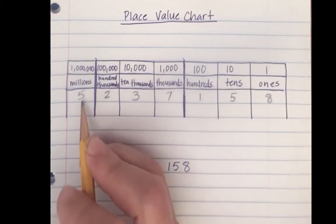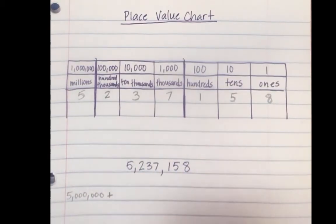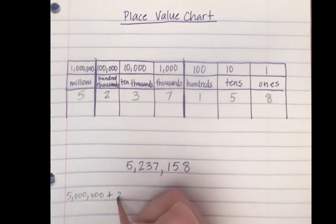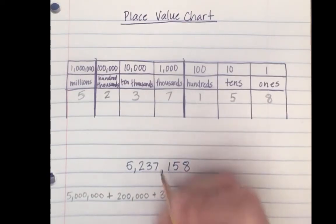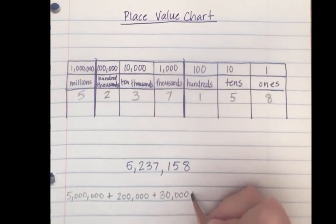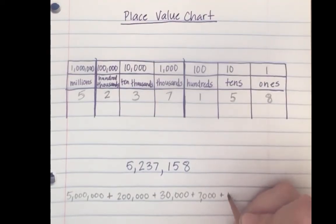We would have five million plus two hundred thousand plus thirty thousand - three tens would be thirty thousand - plus seven thousand plus one hundred plus fifty, and then eight.